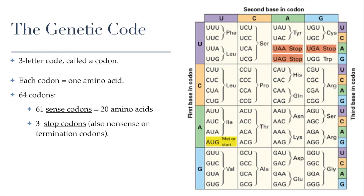Stop codons basically tell the cell to stop the process of making a protein. Whenever those three letters come up, the cell knows this is the end of the protein. These stop codons come at the end of the gene.